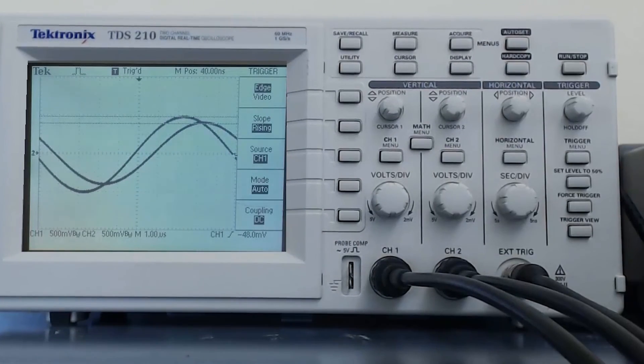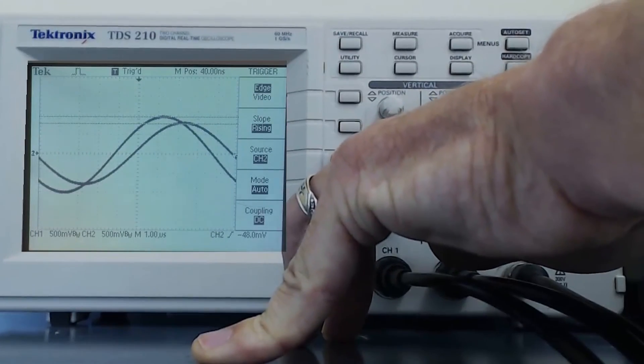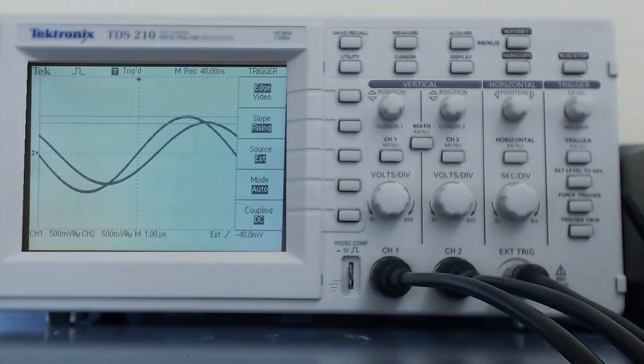For that, I will use a BNC cable to connect the sync to the external trigger. To use the external trigger, I go to the button next to Trigger Source on the oscilloscope screen, and select External. This allows the oscilloscope to trigger off of the very stable square wave the sync of the function generator outputs and renders any distortion of the output of the function generator irrelevant.